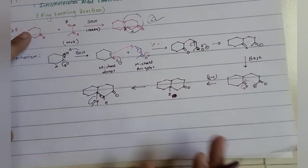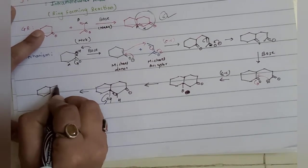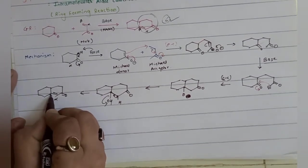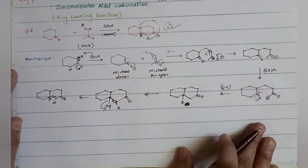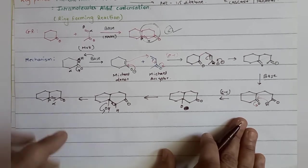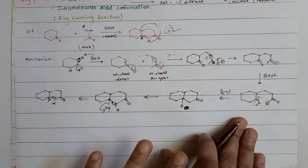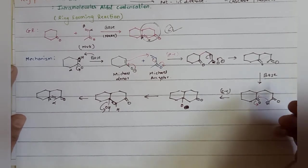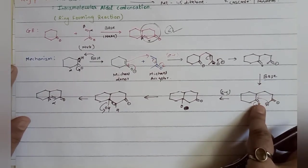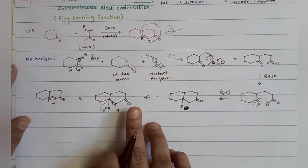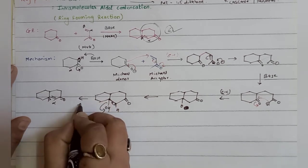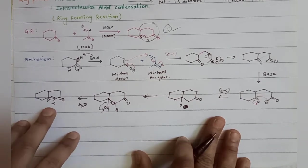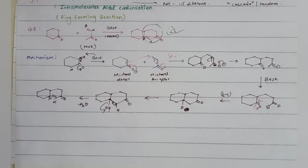The product you get is a 6-membered ring with a double bond - this is your final alpha-beta unsaturated ketone. This is the entire mechanism. You have to remember the three steps: first carbon-carbon bond formation with oxygen, then protonation, and finally dehydration - where a water molecule leaves and you get your double bond. This is how you get the complete final Robinson annulation product.